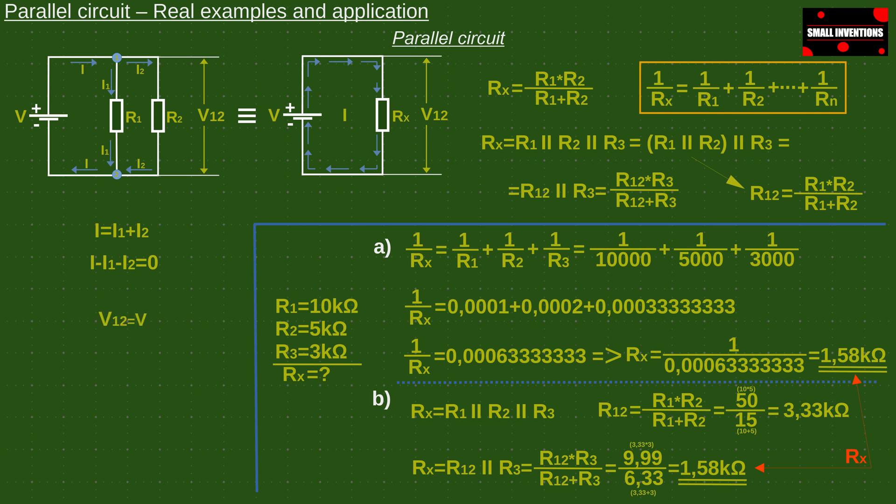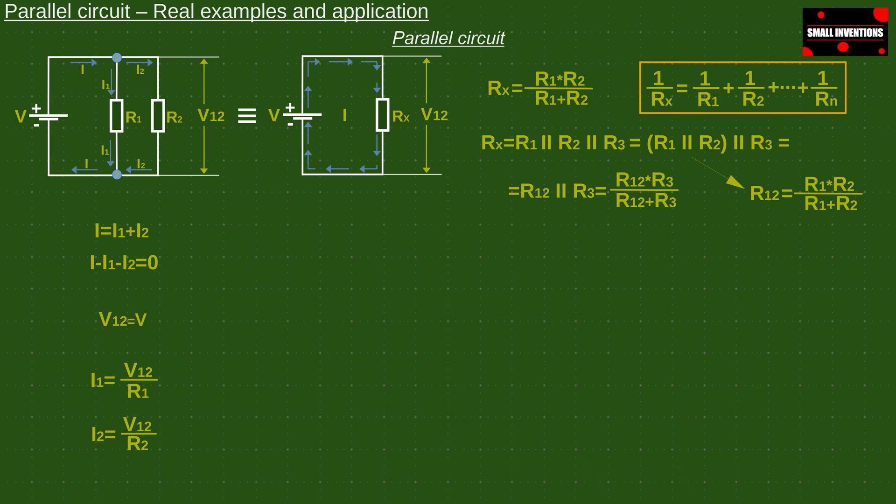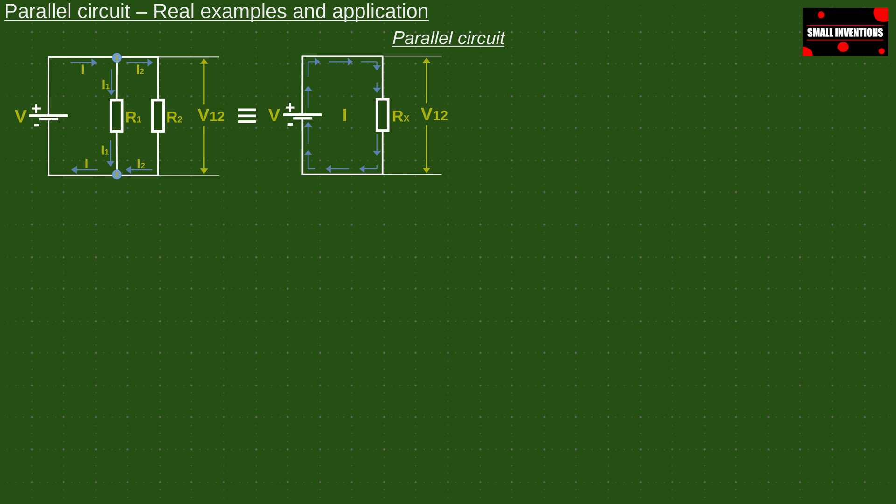V1-2 is actually the common voltage across resistors R1 and R2, in our case the supply voltage. Finally, using Ohm's law, we calculate the currents I1 and I2. That should be all you need to know about a parallel circuit, so that you can further independently calculate and design these types of circuits.